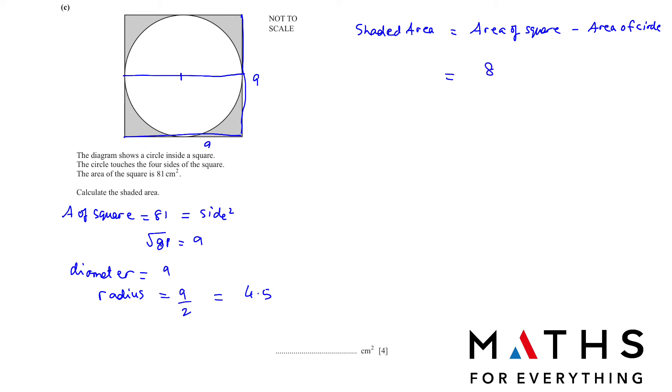Shaded area will be area of square, 81 minus area of circle. To find area of circle, we do pi R square. We found our R, which is 4.5 squared. 81 minus 63.617 will give us 17.38 square centimeter.